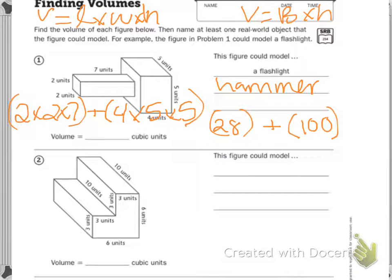28 plus 100 is 128. Remember, we have to multiply all of the units. We do not add anything here until the end. I multiplied, then I added.